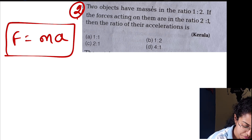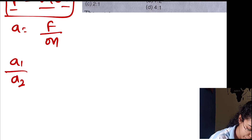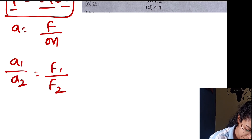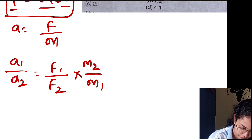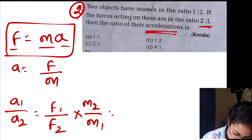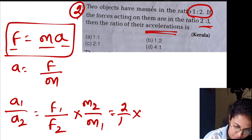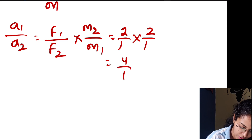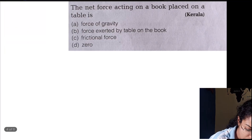According to the second law, acceleration is equal to force upon mass. So a1/a2 = (f1/f2) × (m2/m1). That gives option number D as the correct answer.